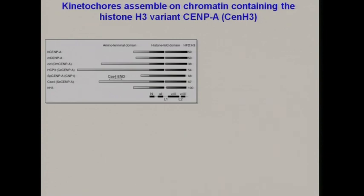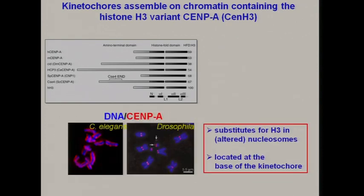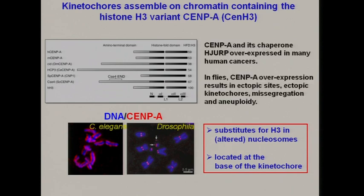What is conserved among all these organisms are the components that make up the centromeres. Kinetochores, which are the protein component of the segregation machinery, assemble on chromatin containing a histone H3 variant called CENP-A. This CENP-A molecule substitutes for histone H3 in the altered nucleosomes at the kinetochore. In C. elegans, the entire chromosome acts as a centromere, coated by kinetochore proteins. CENP-A and its chaperone are overexpressed in many human cancers, and if you overexpress CENP-A or chaperone in flies, you can get ectopic kinetochores, missegregation of chromosomes, and aneuploidy.